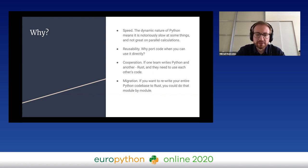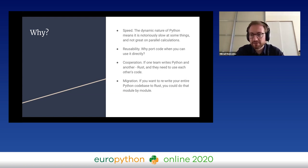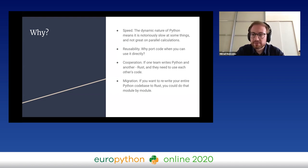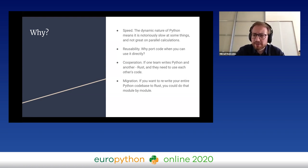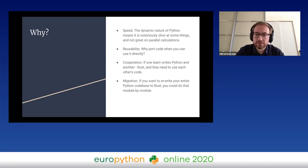First, the most obvious reason would be speed. Python is great and easy to use, but that comes at a cost — the dynamic nature of Python means it runs at a very high level, so you might want to speed it up with an extension. Then there's reusability: you don't have to port the whole code to Python. If your main codebase is in Python, you can just use some code from another language. For example, large parts of NumPy or SciPy are still written in Fortran.